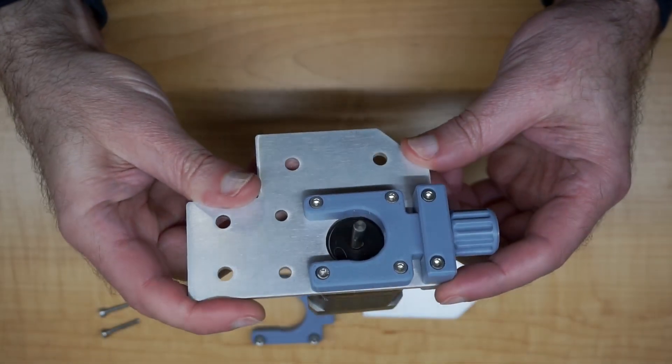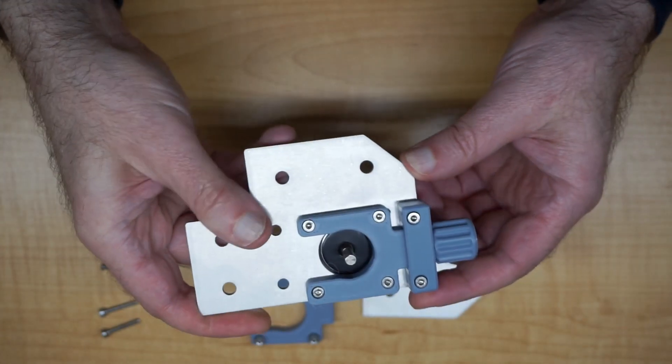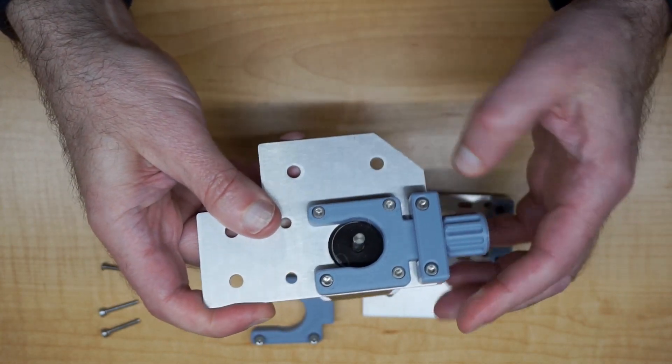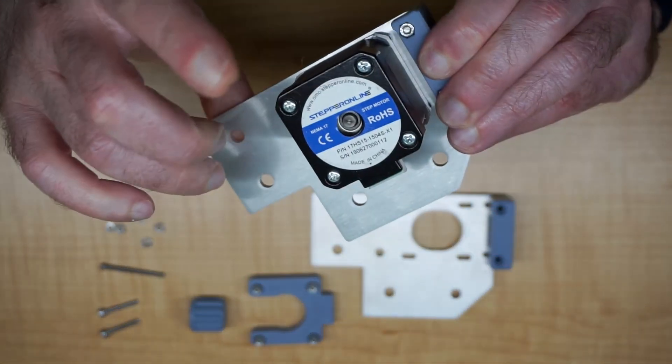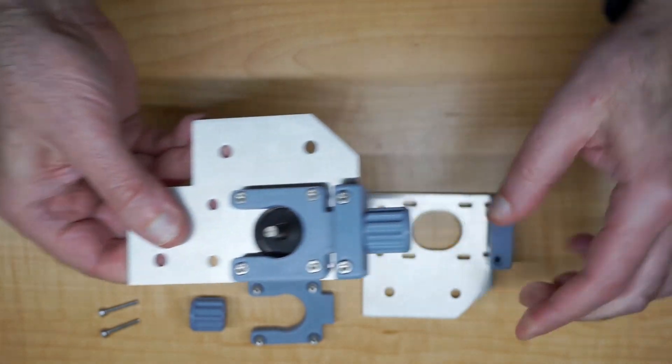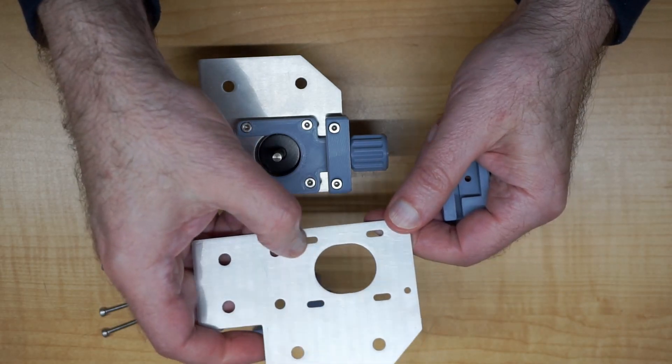In one of my videos I showed how I made this tensioning system for the RatRig V-Core 3. The basic premise is that you're bolting your motor onto a plate that has sliders in it, which allows for five millimeters of movement for the motor.